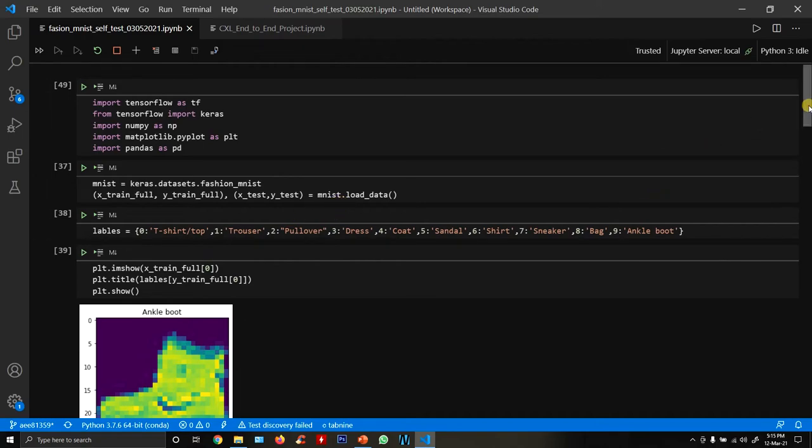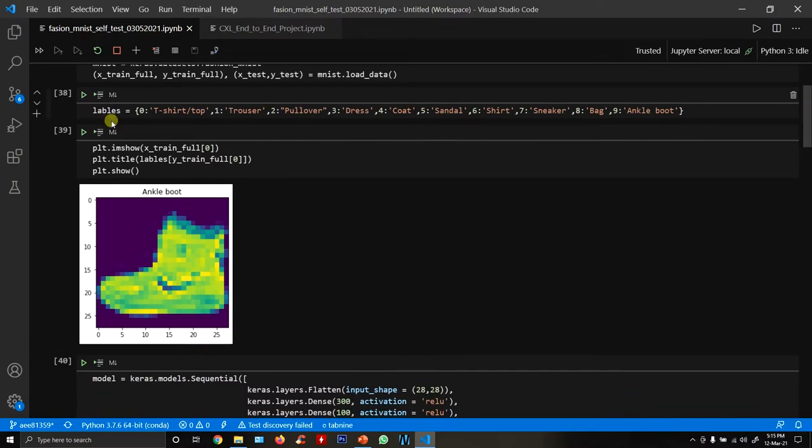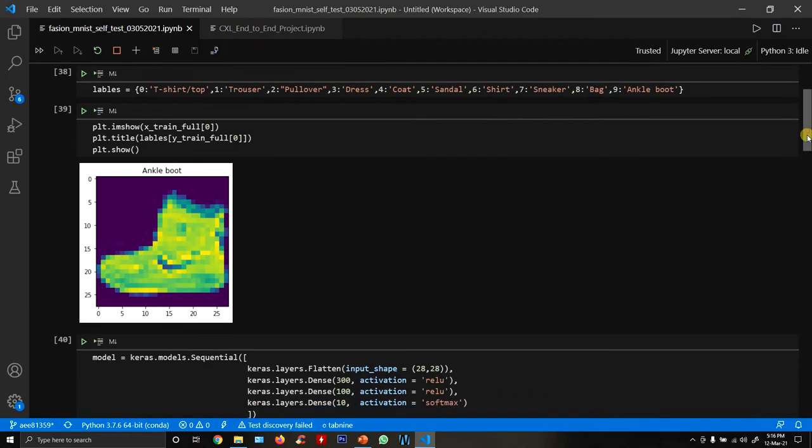In this block we're just reading the data from Keras datasets, then we extracted the labels for the tags. Here we're showing what the images look like - one sample image from our dataset. This image is of an ankle boot and it's labeled as ankle boot in the dataset.